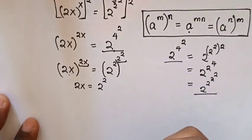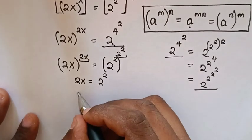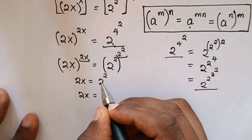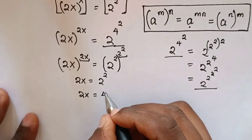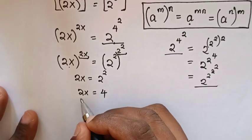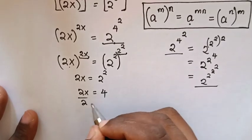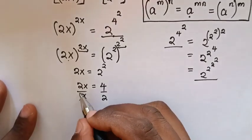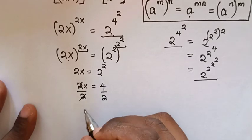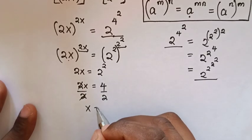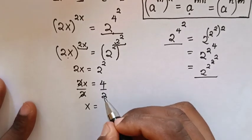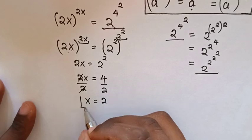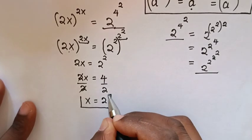Then our equation will be 2x is equal to 2 power of 2, which is 4. So we divide by 2 in both sides — this will cancel with this — and x is equal to 2. So this is the value of x.